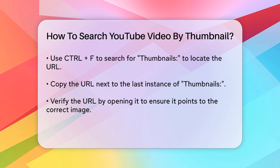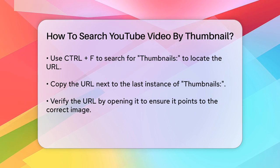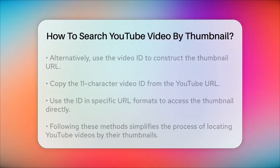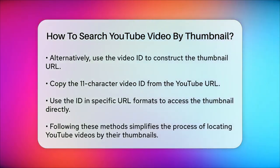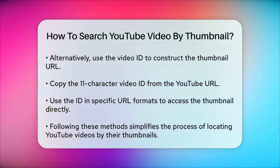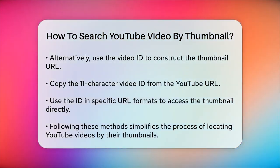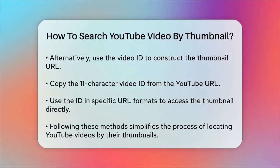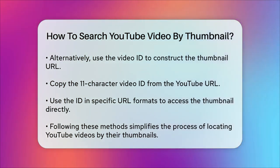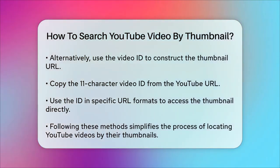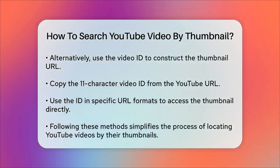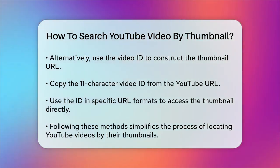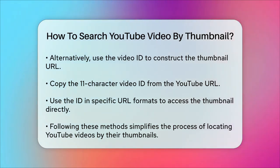Alternative method using the video ID: another way to find the thumbnail URL is by using the video ID. One: copy the video ID from the YouTube video URL — it's the 11-character alphanumeric ID. Two: construct the thumbnail URL by pasting the ID into the appropriate YouTube thumbnail URL format.